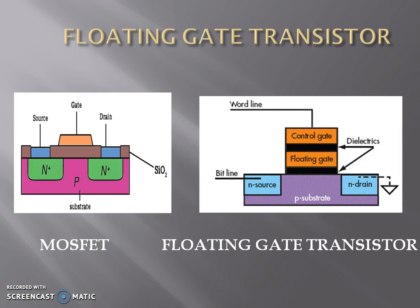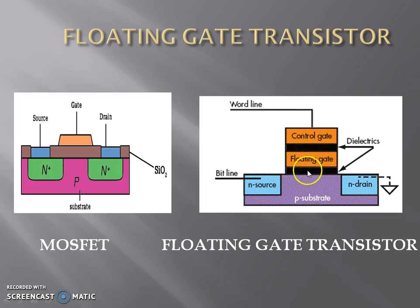The basic device used in flash memory is a floating gate transistor. The floating gate transistor is a variant of MOSFET in which an additional gate is kept in between the control gate and body. This gate is sandwiched between two dielectric layers, therefore it is known as a floating gate and it is electrically isolated. The data which is encoded depends upon the amount of charge trapped in this floating gate.